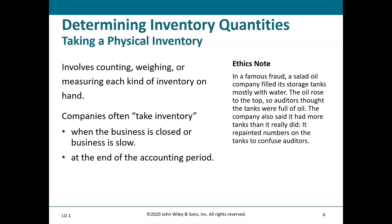Physical inventory is done at the end of the accounting period. In practice, companies often do it in November or December, close to year-end, and then use processes called rolling the inventory forward or back from the count date to the accounting date — something auditors check carefully. For example, if inventory was counted on December 15th, you'd need to account for all transactions from the 15th through the 31st.